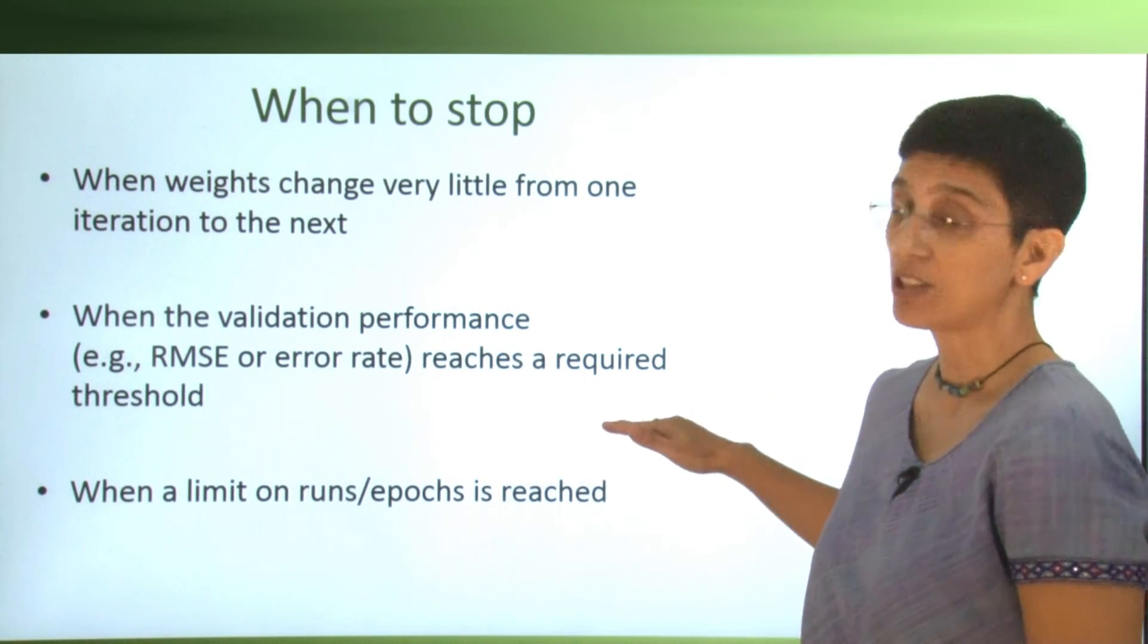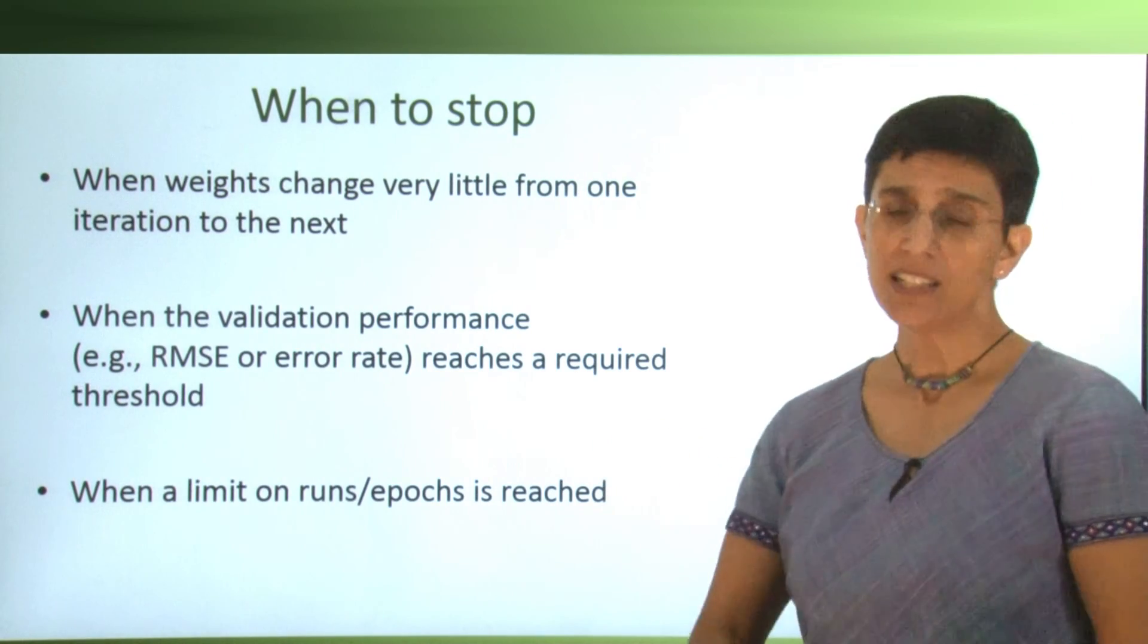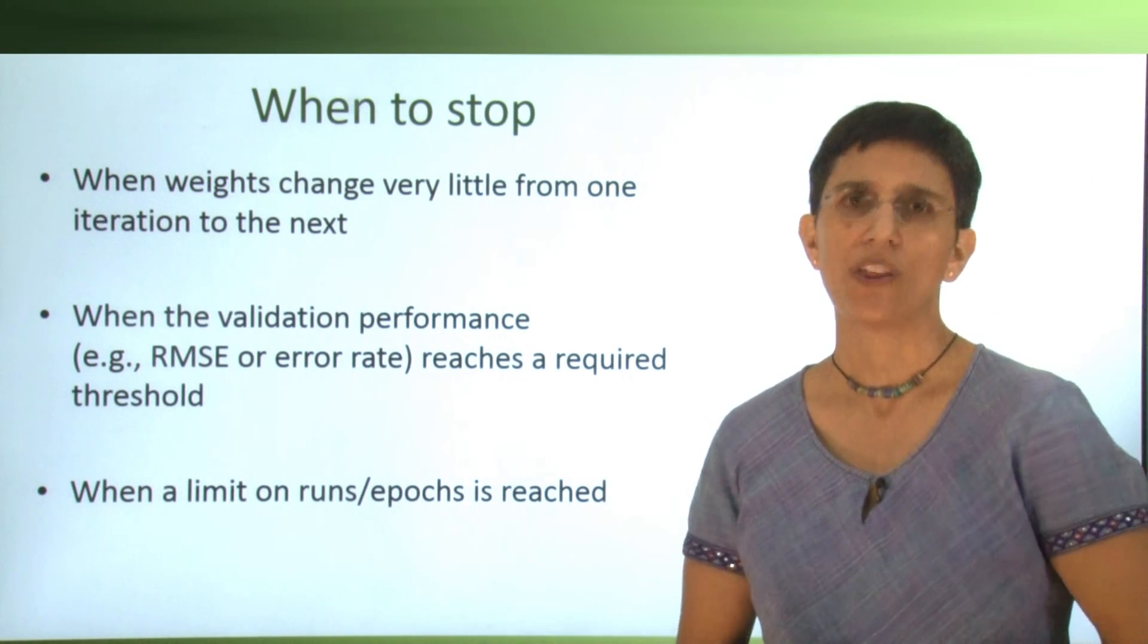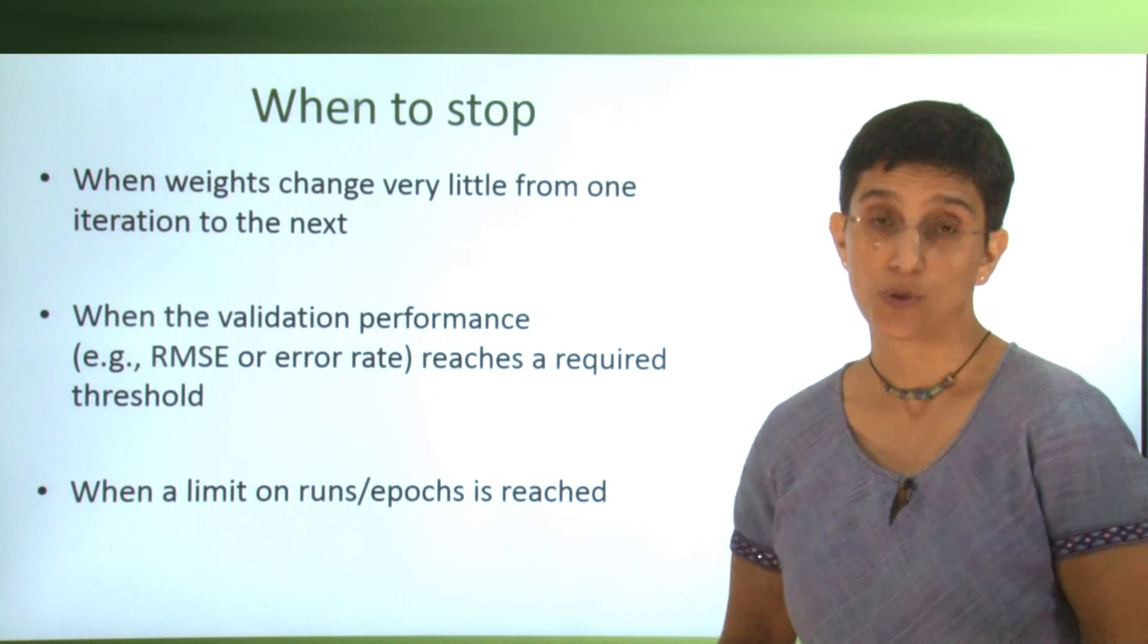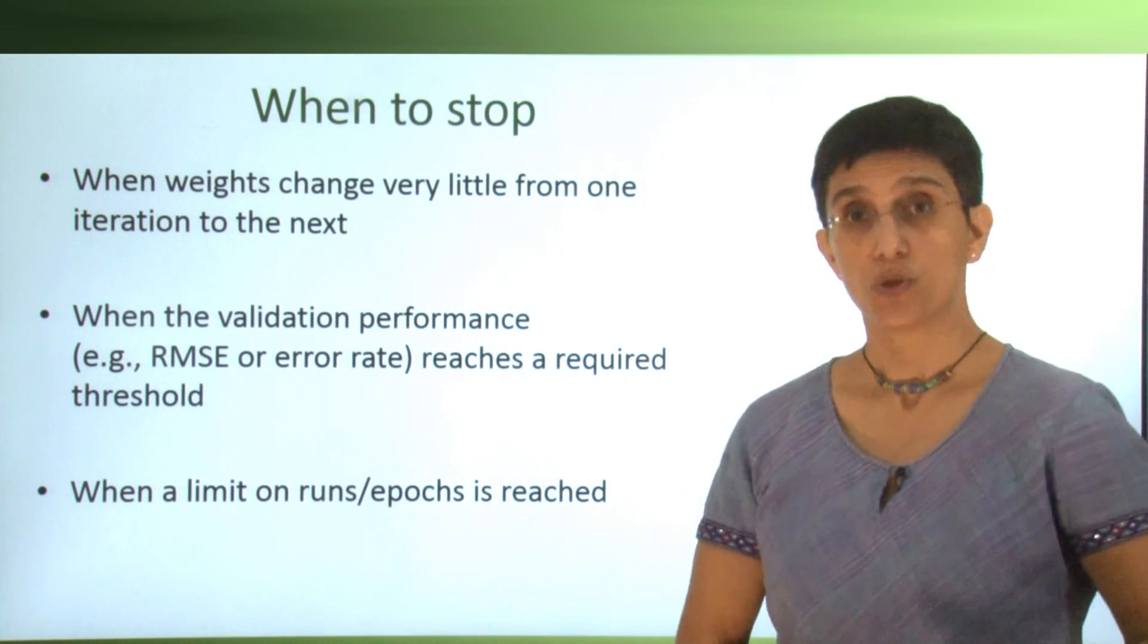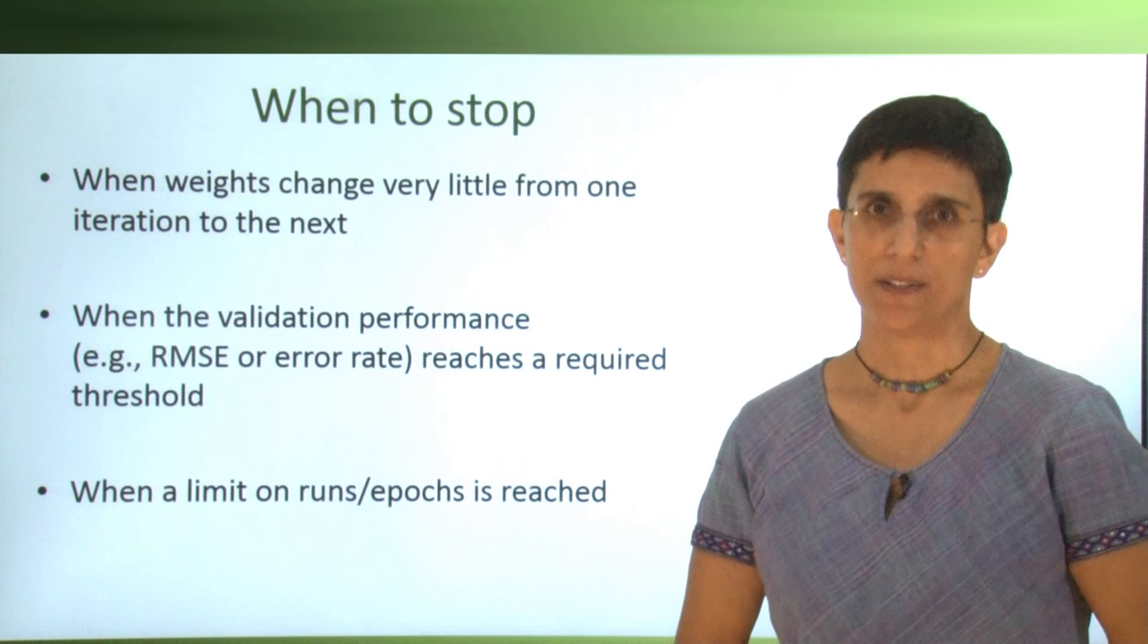Another option is maybe you're optimizing the performance on the validation, so that when your RMSE is below a certain number, you actually stop. And finally, you can just say, I don't want more than 20 epochs or 20 sweeps. Some software allow you to tweak this, and some software do not.